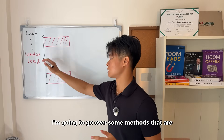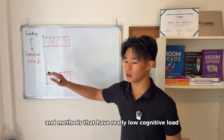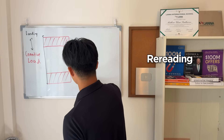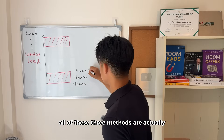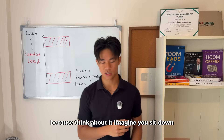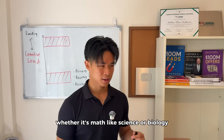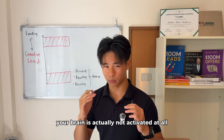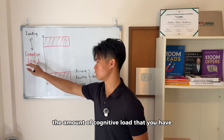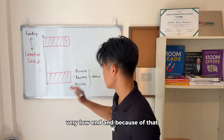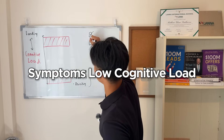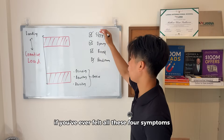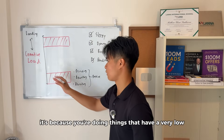I'm going to go over some methods that have really high cognitive load and methods that have really low cognitive load. Let's start with low cognitive load. The three main culprits I found were rereading, rewriting, and revisiting. All three of these methods are very passive. If you're just simply rereading notes and looking at slides, your brain is actually not activated at all. The three biggest common symptoms of low cognitive load are feeling sleepy, drowsy, bored, and daydreaming. If you've ever felt all four of these symptoms, it's because you're doing things with very low cognitive load.